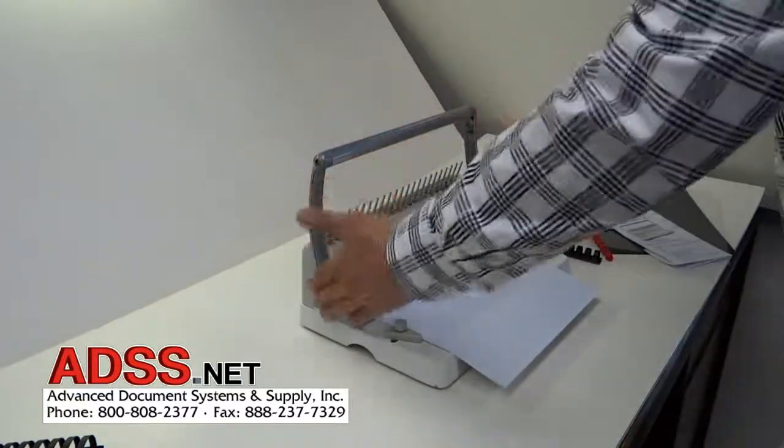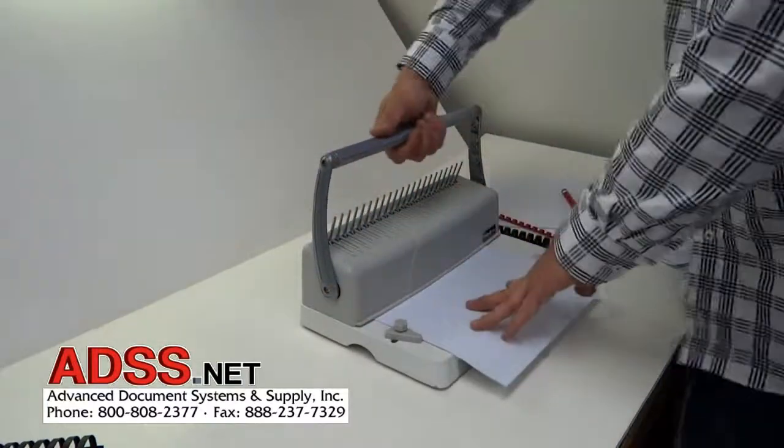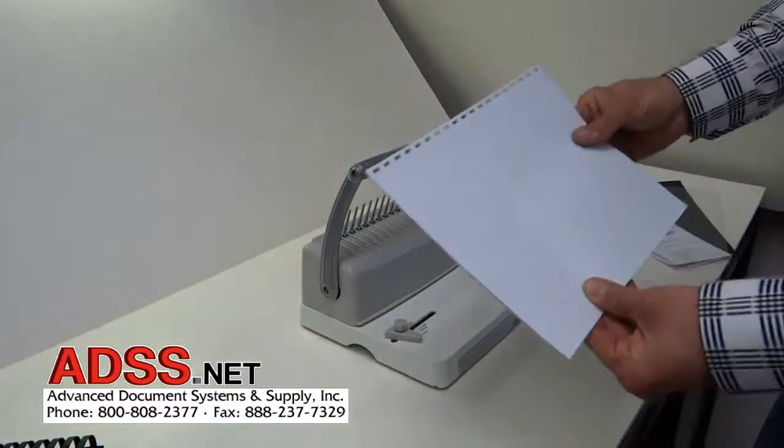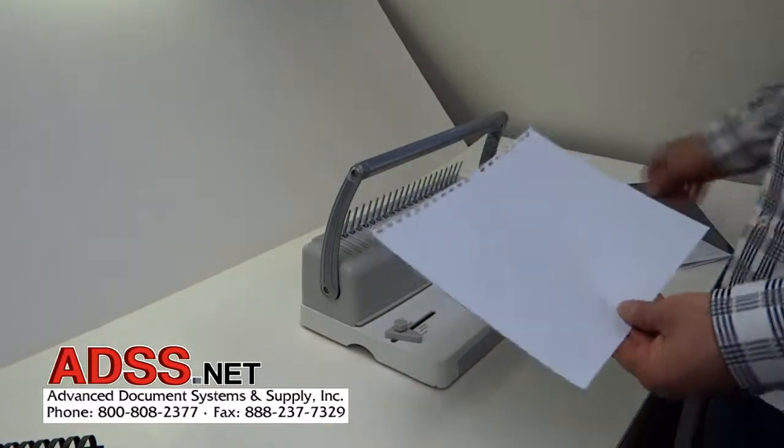Push down. It also has a nice U-shaped handle here so that you have good stability and it's easy to push down. So in here you have your holes for the comb binding.